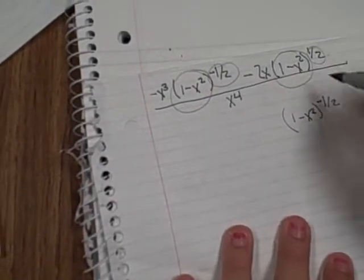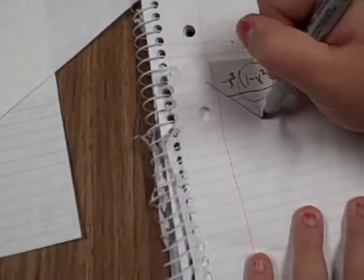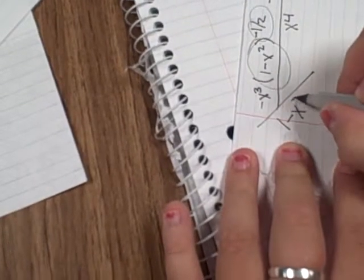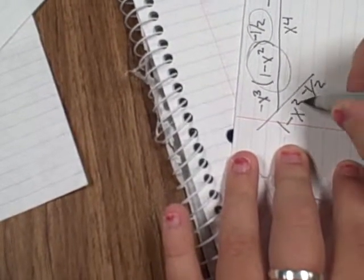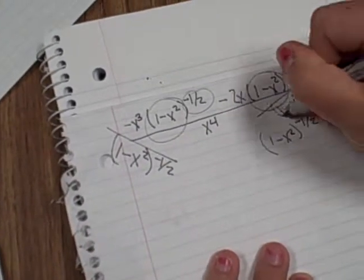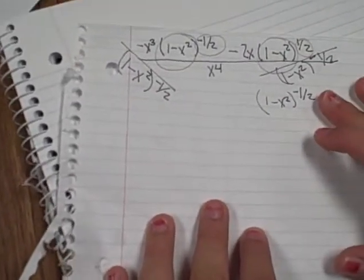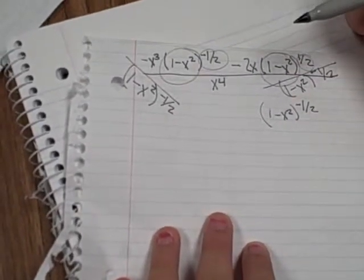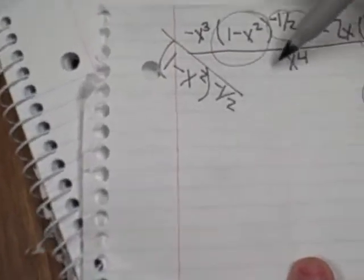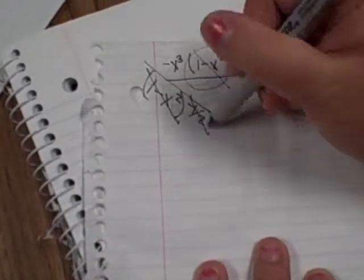And then after you get all this, you divide each of these by what you've taken out. So you have 1 minus x squared to the negative one half over here and you have the same thing over here. Okay, so now that you've did this, you take out like terms or you cross out. So as you can see, all of this is the same, so this cancels out along with this, this, and this.